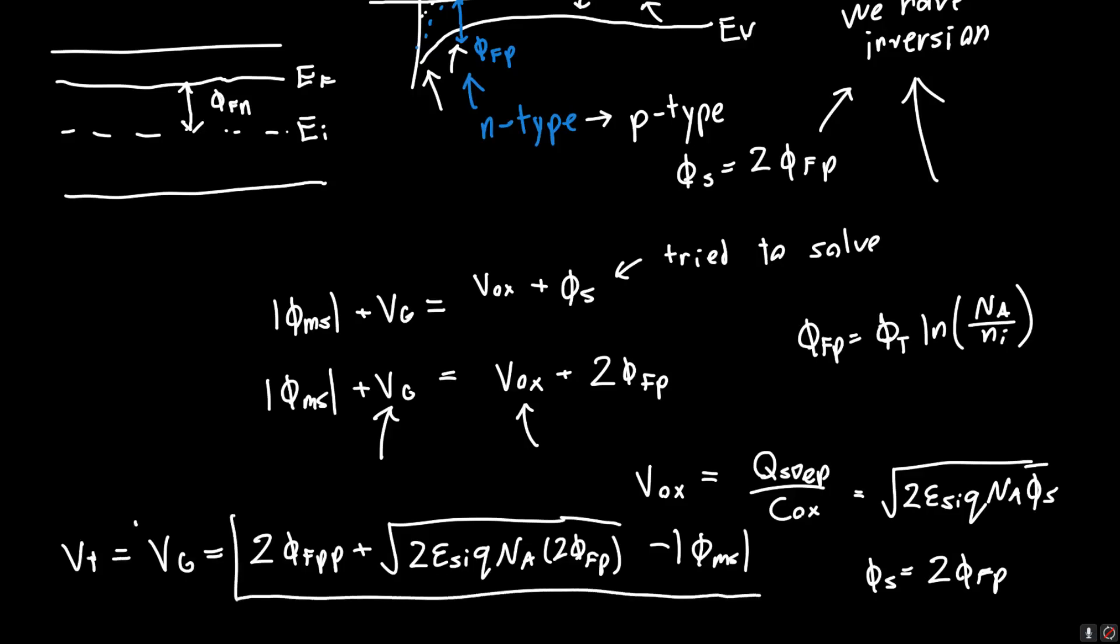These are all just numbers in here. Epsilon_silicon, Q, our doping, the Fermi intrinsic Fermi potential or PHI_FP. I don't really know if it has a name, and PHI_MS. So, the only trick here is figuring out what these quantities are. Now, there are a couple subtleties that I want to go over real quick.